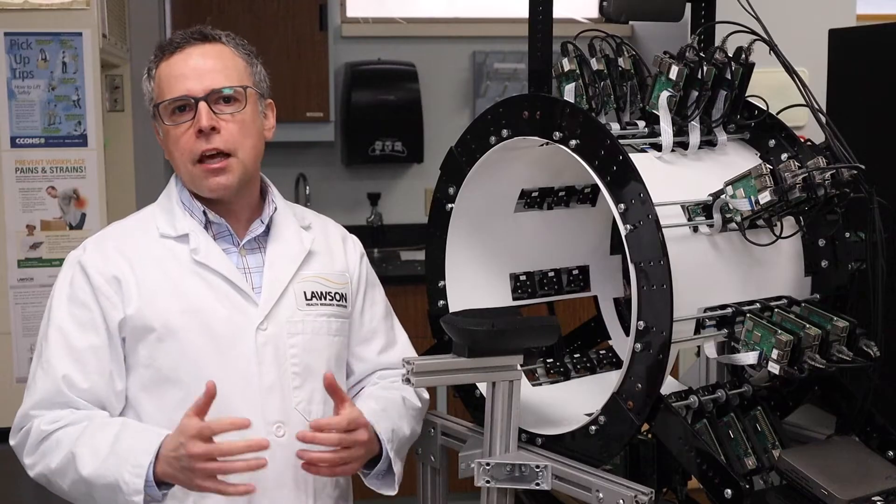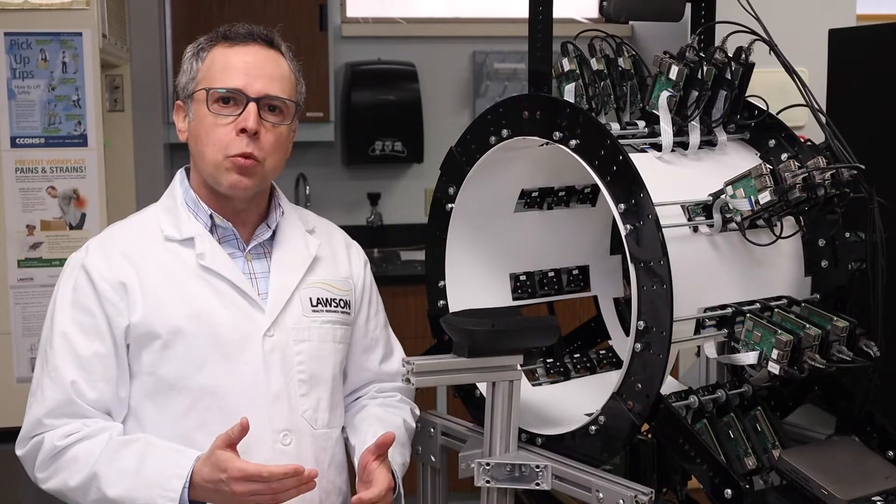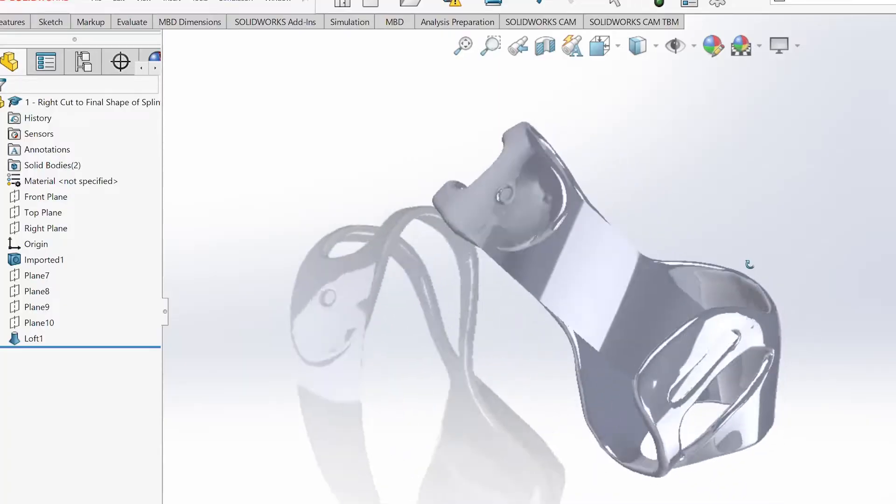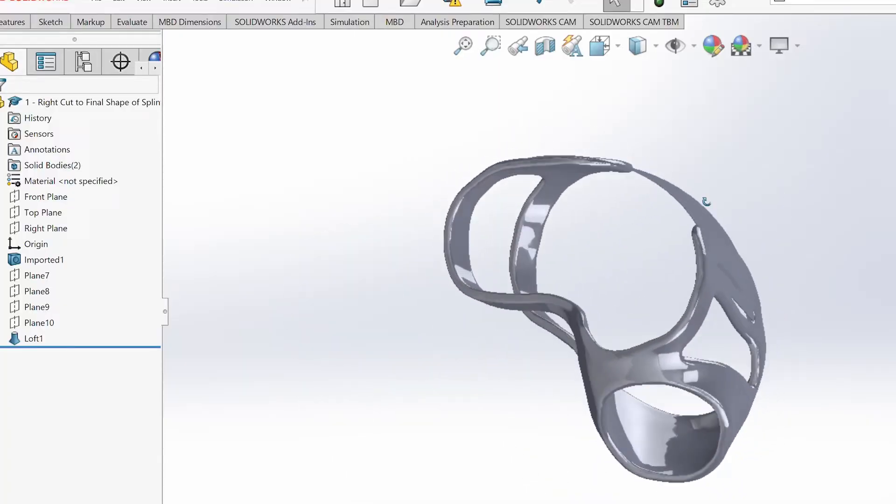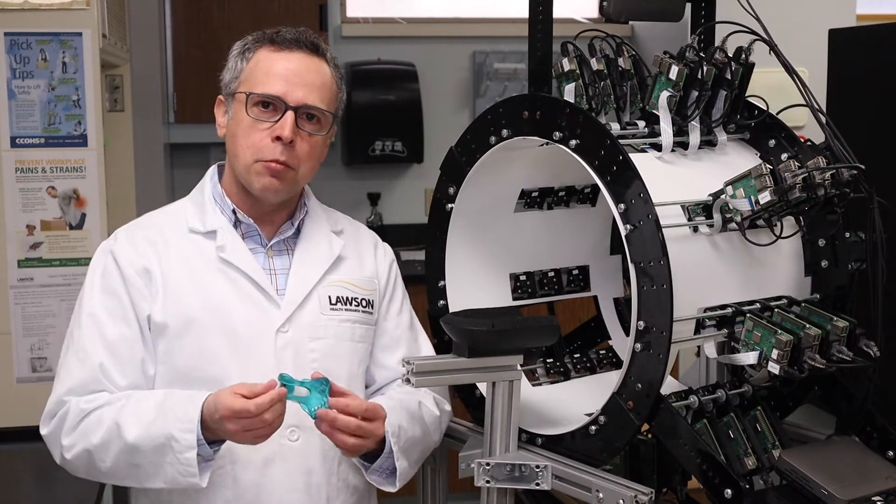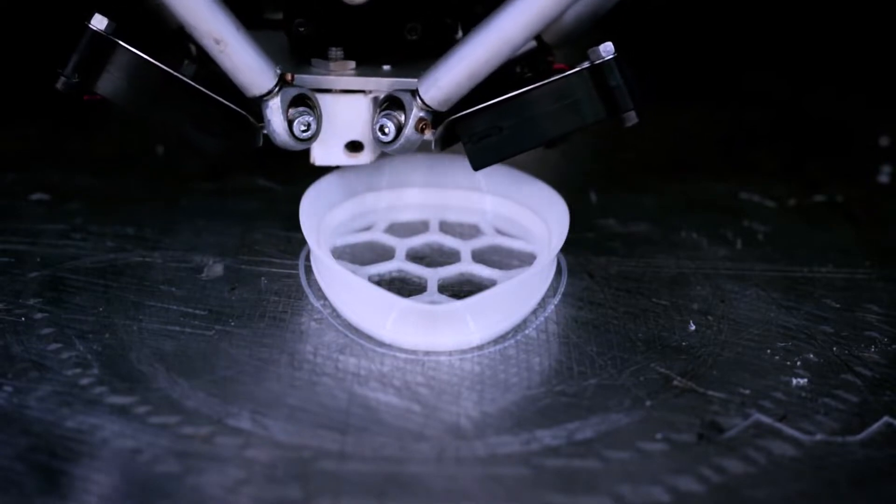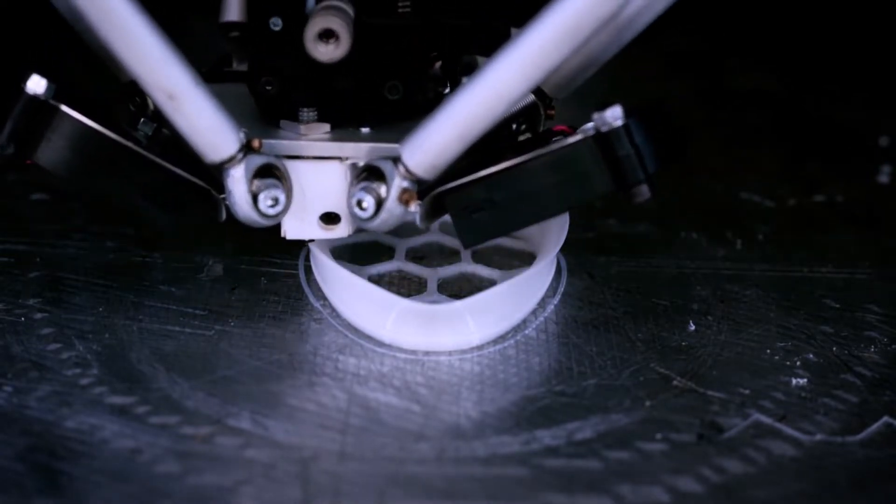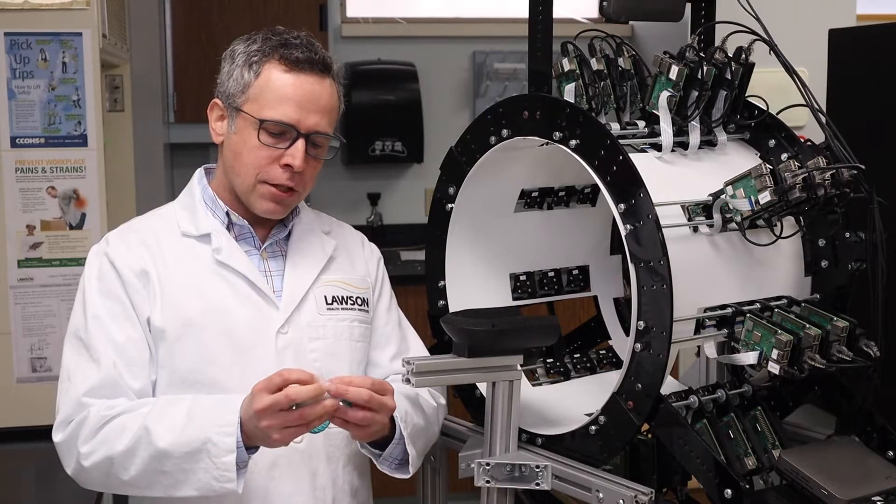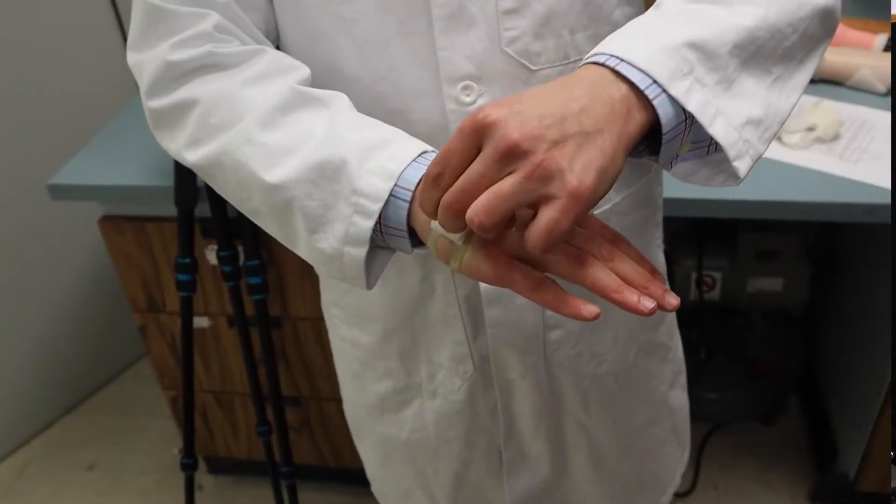We take that 3D model into our software, and from that we can create a splint which would look something like this as an example. From here, we would send that model to a 3D printer which would produce this, and then the therapist would place a fastener on it so that the patient can wear it comfortably.